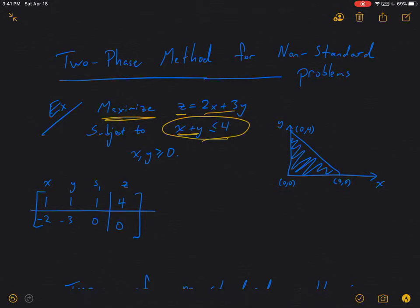And the constraints were always going to have some linear combination of our variables on the left side is less than or equal to some positive number over here. And we also always had this non-negativity constraint where x and y were assumed to be non-negative.